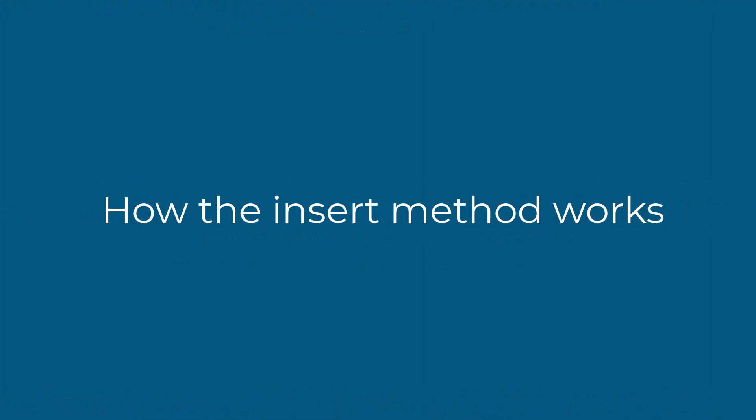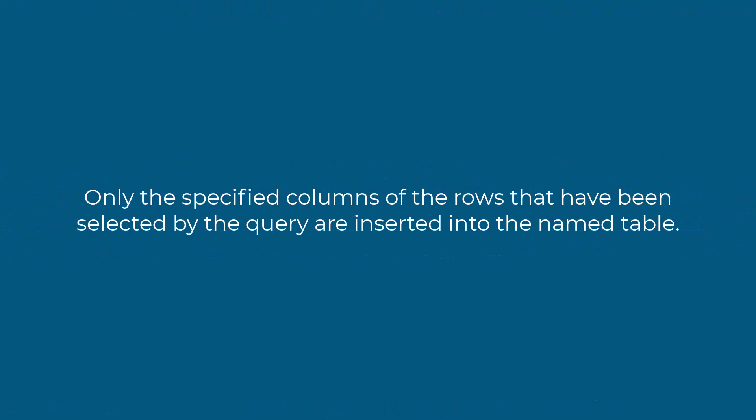Now let's discuss how the insert method works. The first point: only the specified columns of the row selected by the query are inserted into the named table. Whatever columns are there, you specify them, they go to the query, it fires, and the data is stored in the database. You must specify the columns of the rows being inserted.